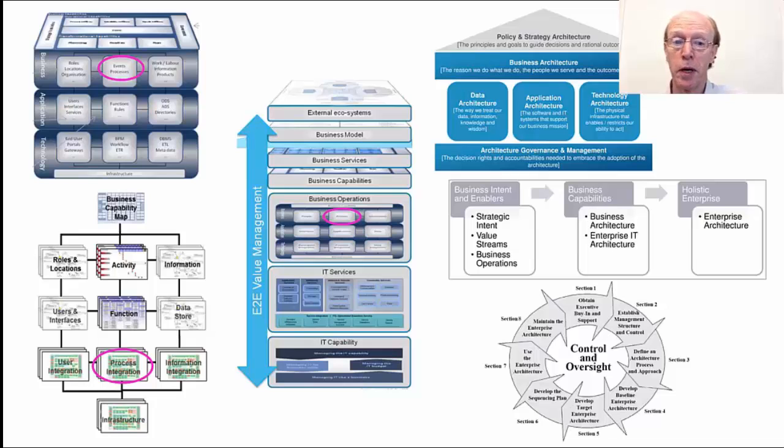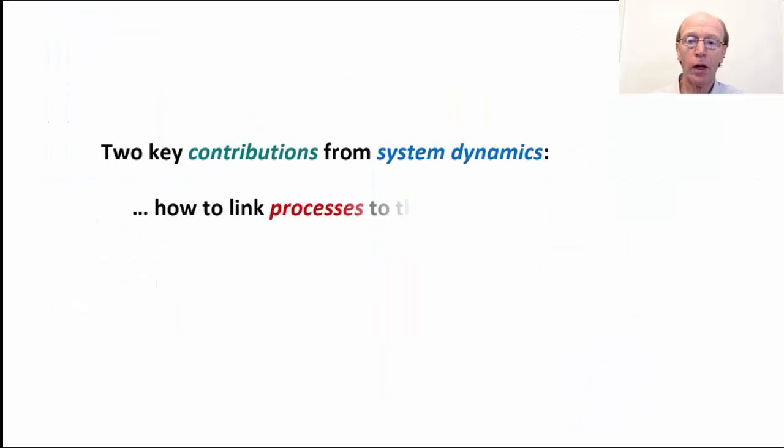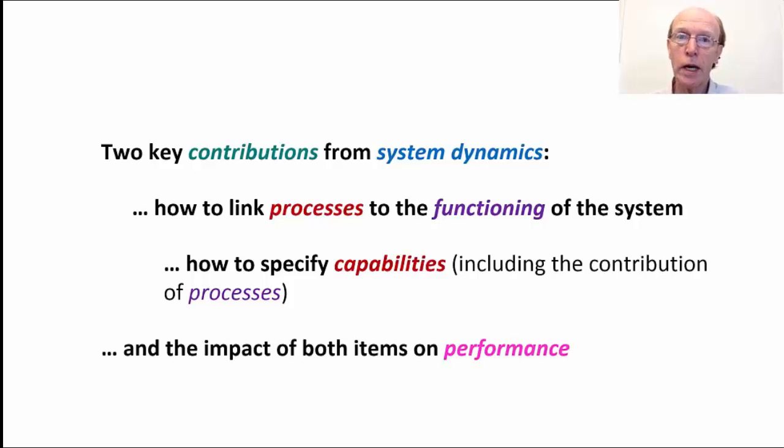The second key term that appears is capabilities. Enterprise architecture needs to take account of the organization's capabilities to get things done. Business processes contribute to those capabilities, but capabilities are rather more than just the processes themselves, and the strategy dynamics approach has actually gone to some trouble to define exactly what a capability is. So it looks like there are two key contributions that we can make by bringing system dynamics principles to enterprise architecture.